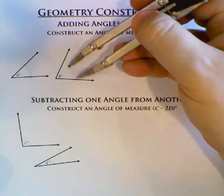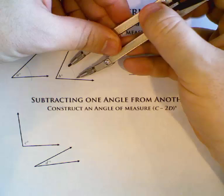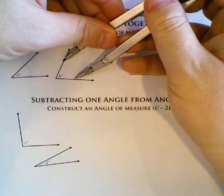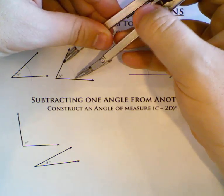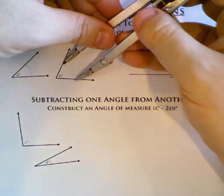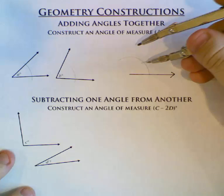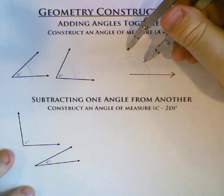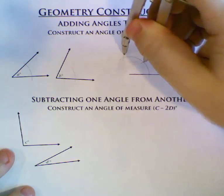So now I'm going to come over here. I'm going to open up my compass to be length B. And once I have those intersection points measured, I'm going to come over here and where I stopped A is where I'm going to start with B.